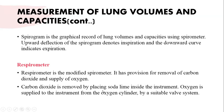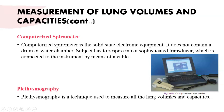The respirometer has provision for removal of carbon dioxide and resupply of oxygen. The third type is the computerized spirometer, where a transducer is attached. It does not contain rubber tubing or a water chamber; the subject breathes through a sophisticated transducer connected to the instrument by a cable, and graphical records along with all readings appear on the computer screen.